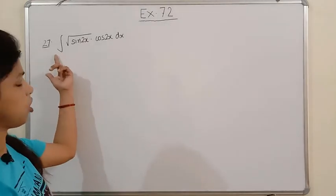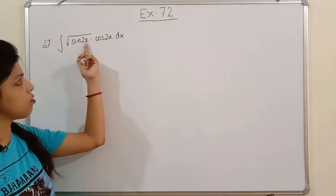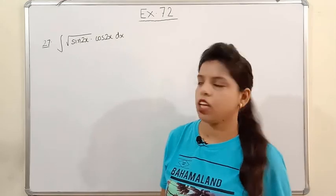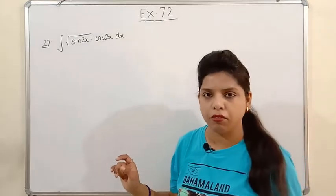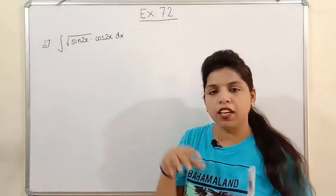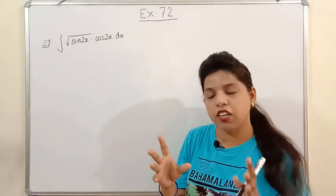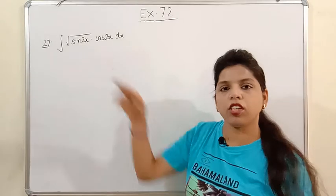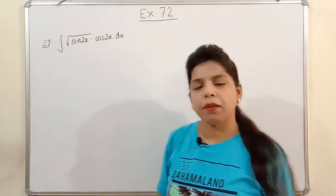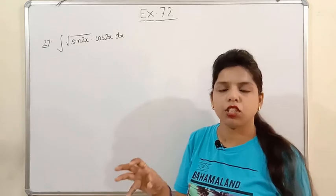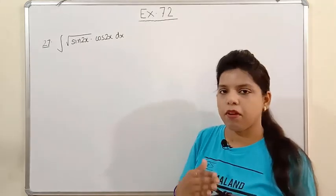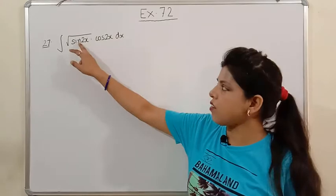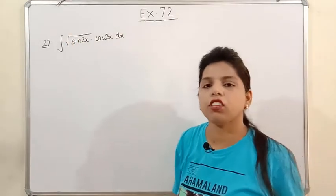Our next question is number 27: integration of √(sin2x)·cos2x dx. I want to correlate this with the previous video — whenever the function is in the form of a radical or has a power in the form of a radical (here square root = power 1/2), we substitute the function in that same form to simplify the question.